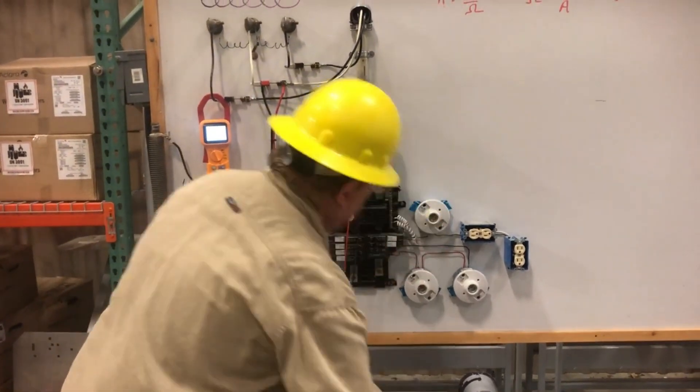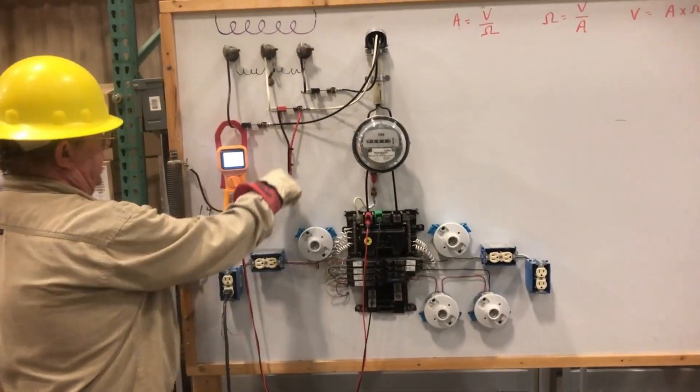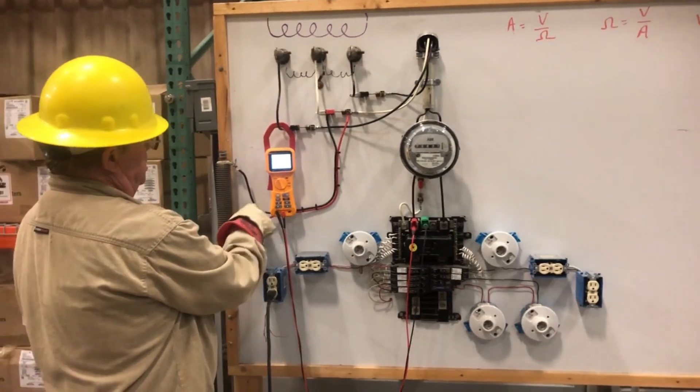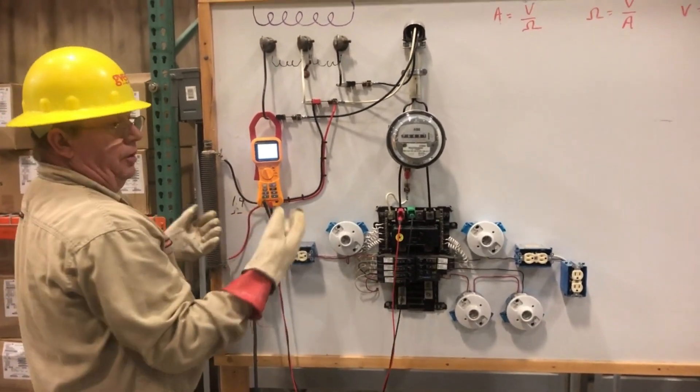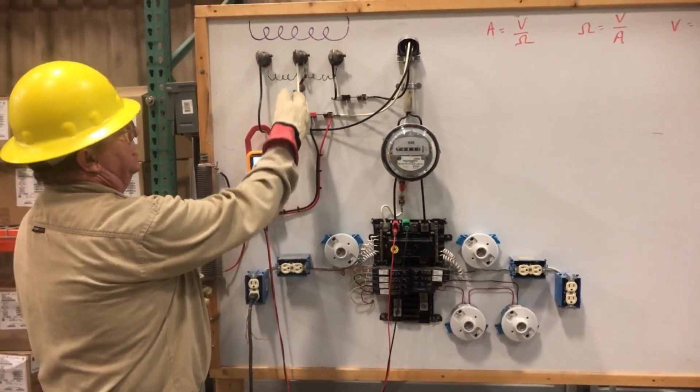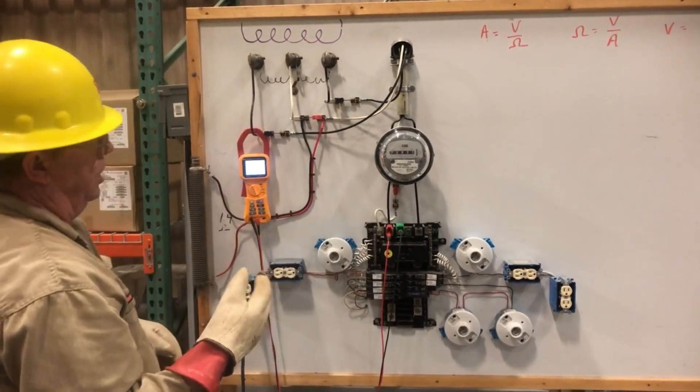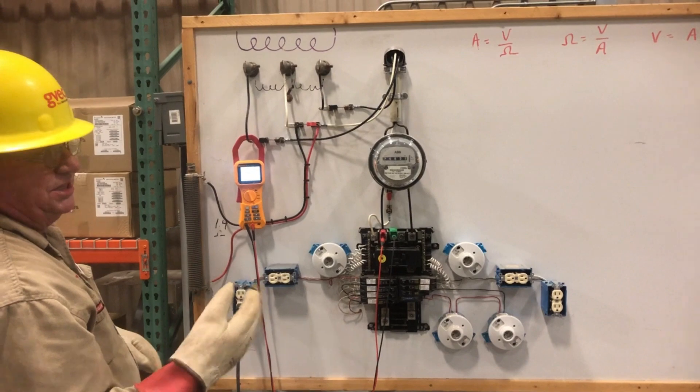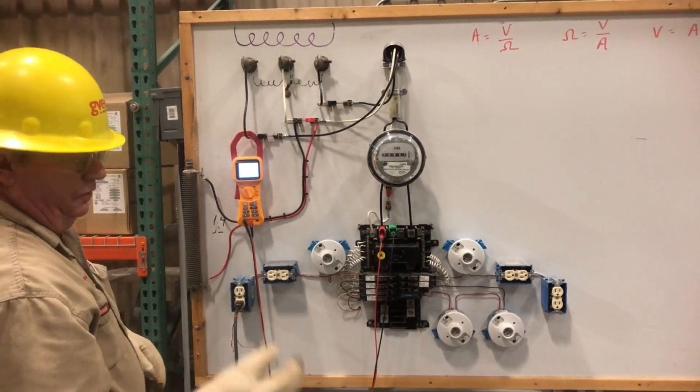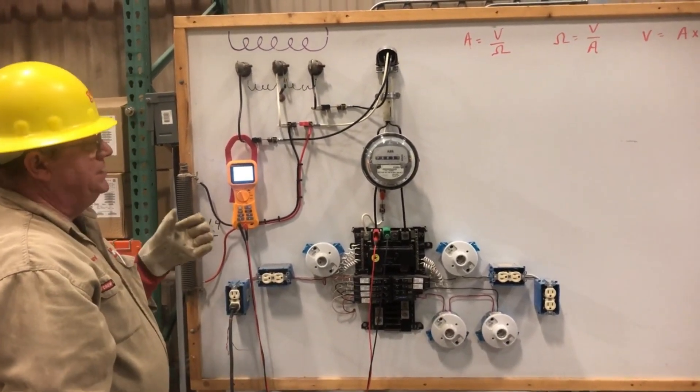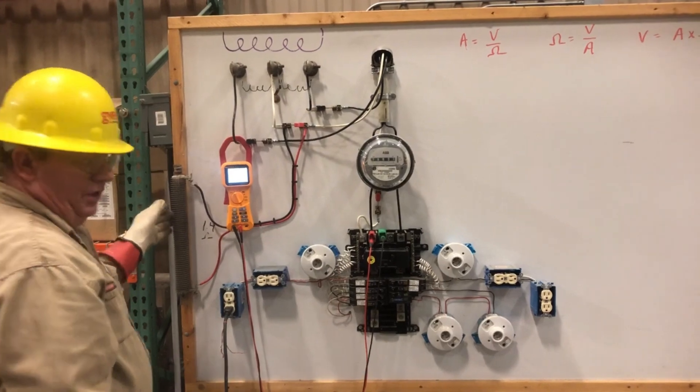Now we're going to add this 1.4 ohm resistor, and we're going to create a resistive load connector right here. So you saw the voltage drop fall to 116.4. Now we're going to put that exact same load, but we have a resistive connector now.